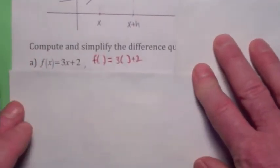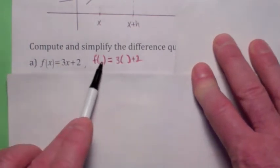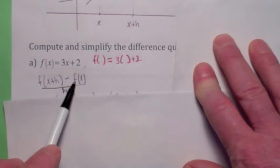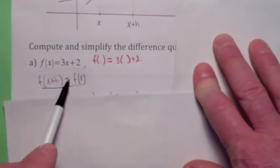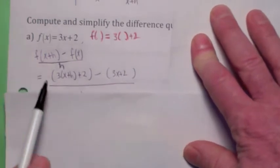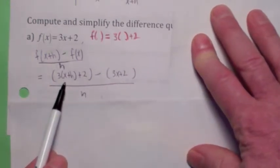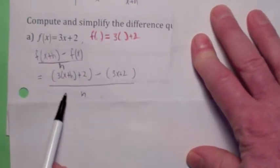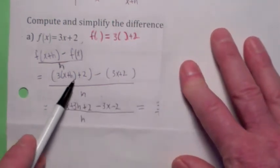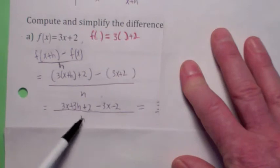So you get, remember, to compute the difference quotient, you plug in x plus h here, x plus h here, and then you subtract f(x). Don't forget to put parentheses around the f(x). So this is what you should get when you do that. This is f(x+h). This is f(x) over h. You have to use the distributive law carefully. You get 3x plus 3h plus 2, minus 3x minus 2.